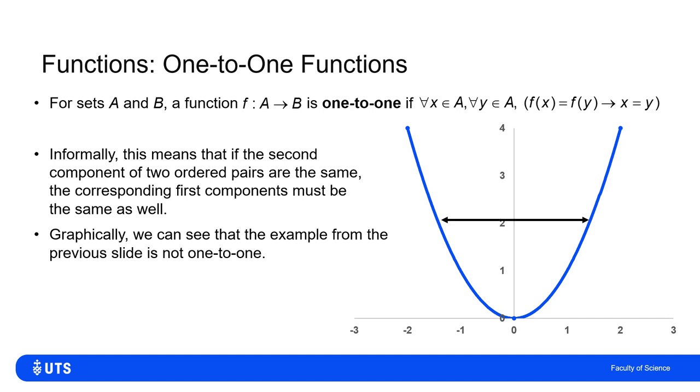I can see fairly clearly from a graph whether a function is one-to-one by drawing a horizontal line. For example, here this function is very clearly not one-to-one.